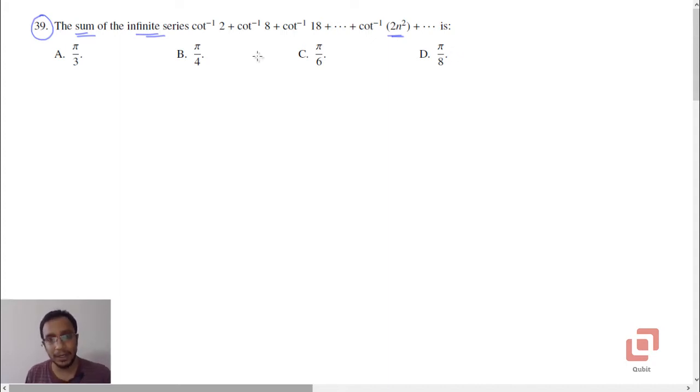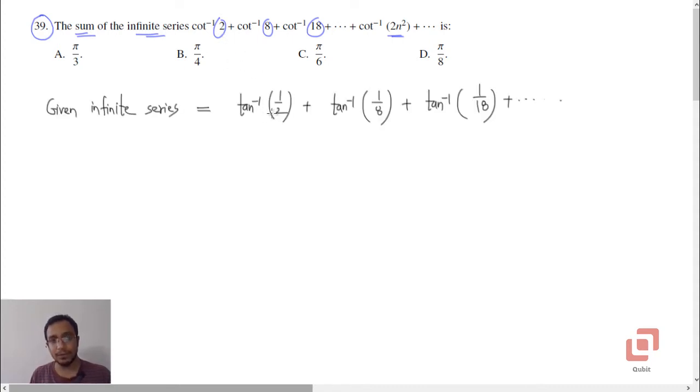So we immediately note that everything inside is positive. You can write the given infinite series using the inverse tangent function. Cot inverse of 2 will become tan inverse of 1 by 2. Cot inverse of 8 will become tan inverse of 1 by 8 and so on.